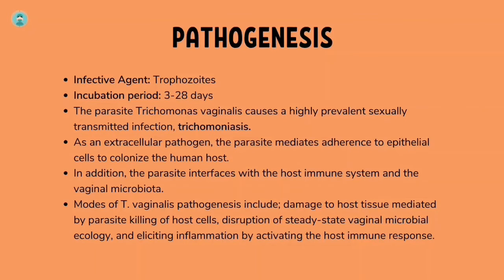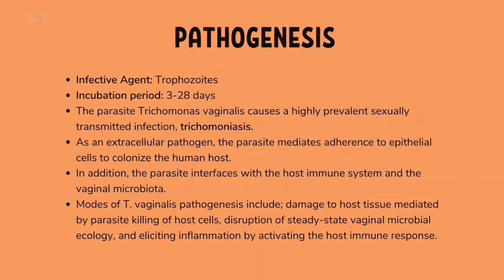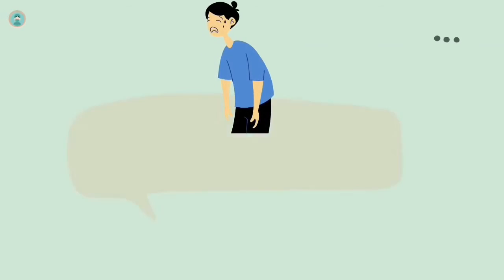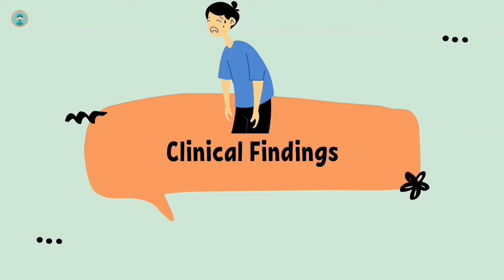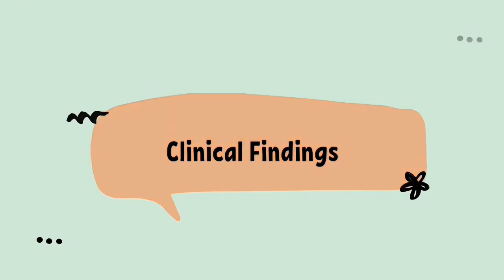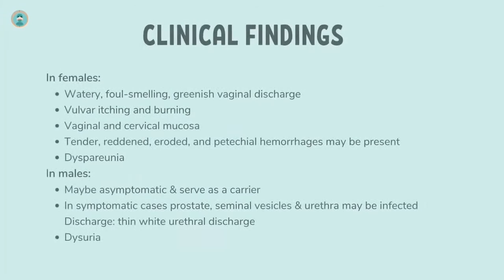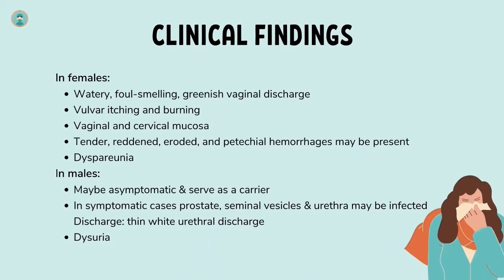Modes of Trichomonas vaginalis pathogenesis include: damage to host tissue mediated by parasite killing of host cells, disruption of steady-state vaginal microbiology, and eliciting inflammation by activating the host immune response.